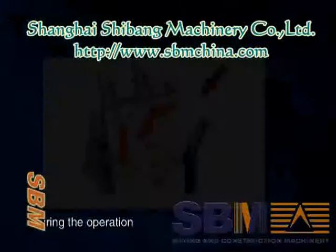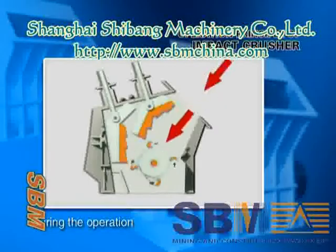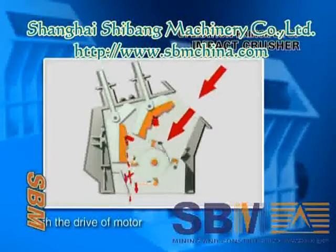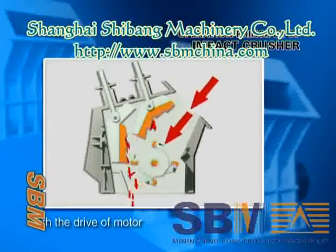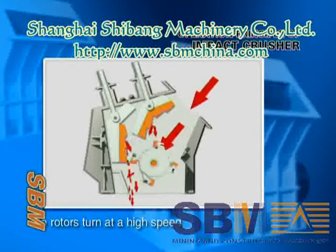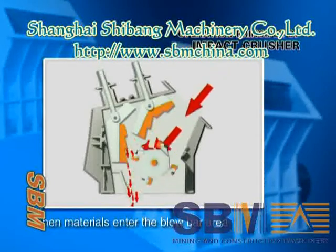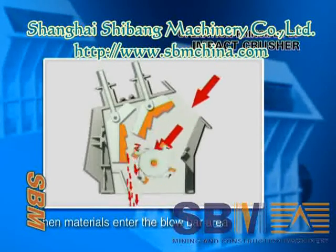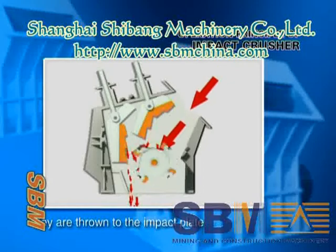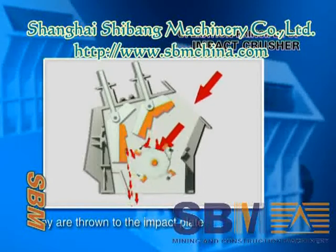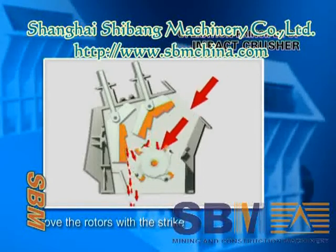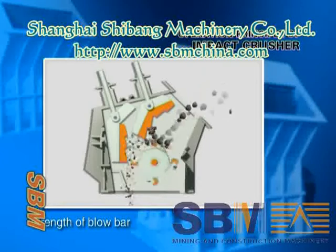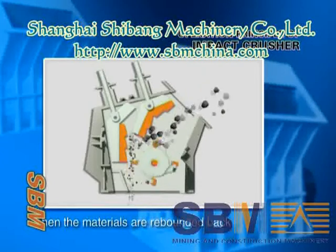Operation principle of the impact crusher: during operation, driven by the motor, the rotors turn at high speed. When materials enter the blow bar area, they are thrown upward toward the impact plate above the rotors by the striking force of the blow bars.